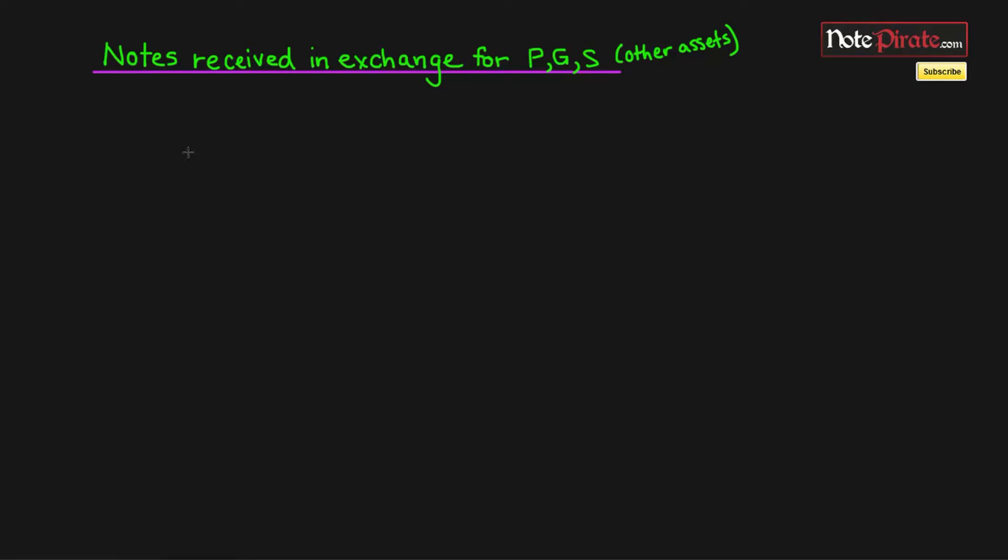Before we look at a note receivable asset that may be impaired, I figured we would look at a scenario where a note is received in exchange for property, goods, or services. That's what the PGS stands for, or other assets. Near the end we'll also look at the concept of imputation. So without further ado, let's look at our example.